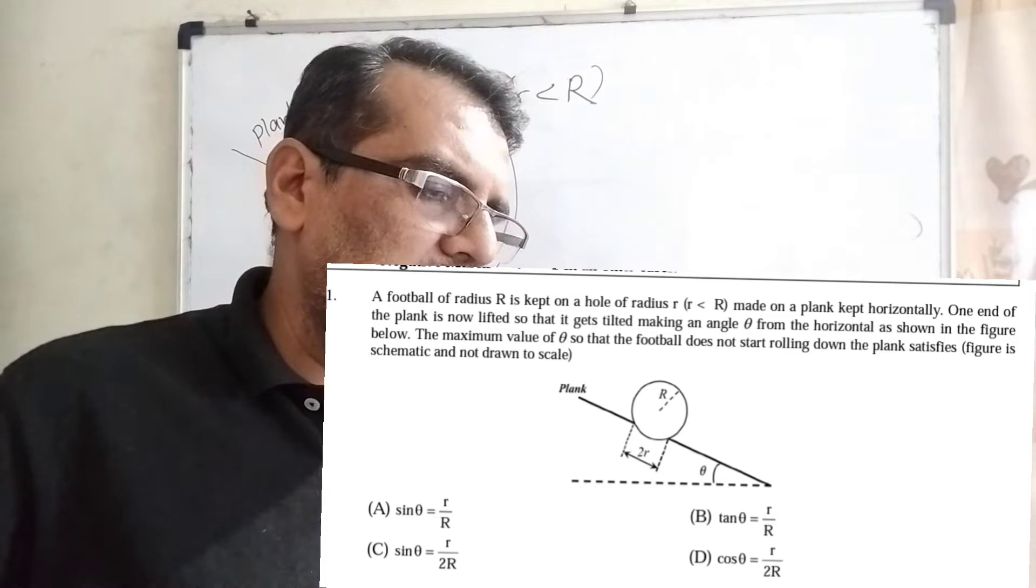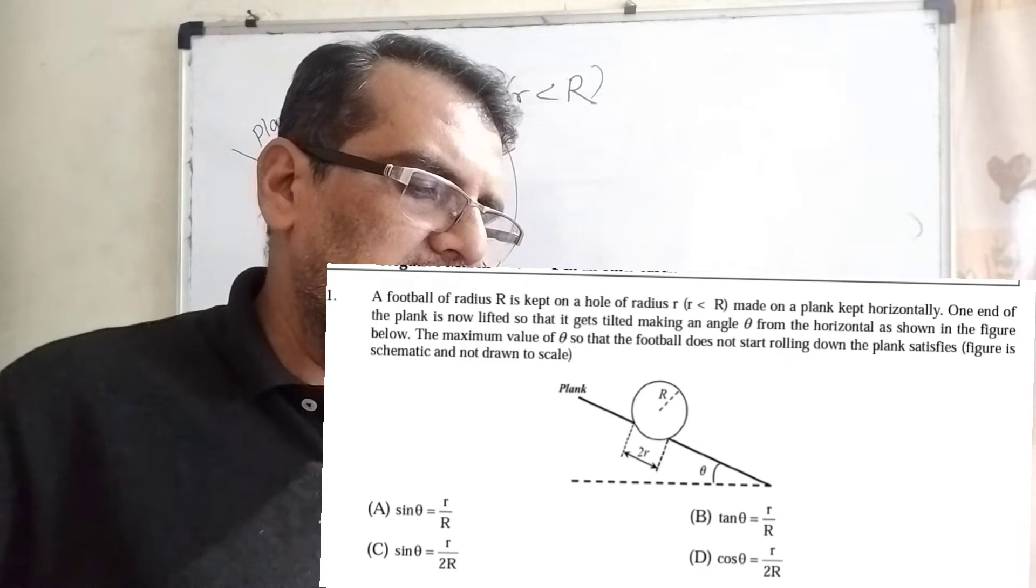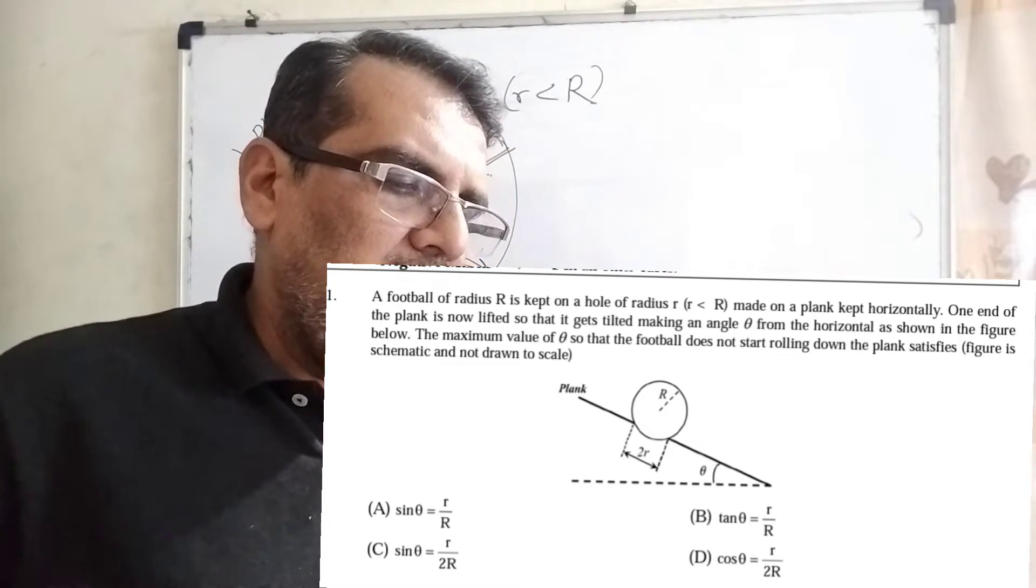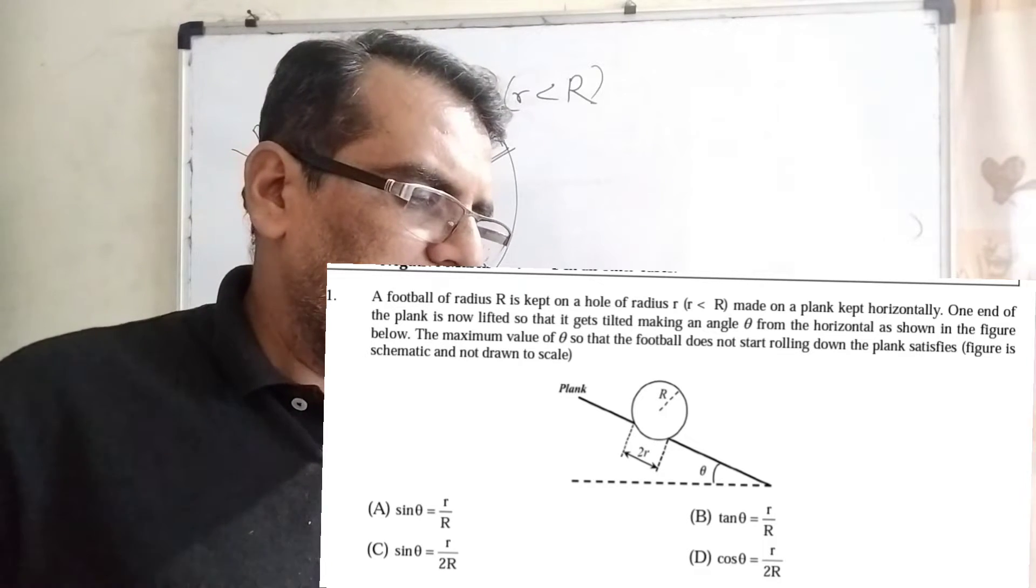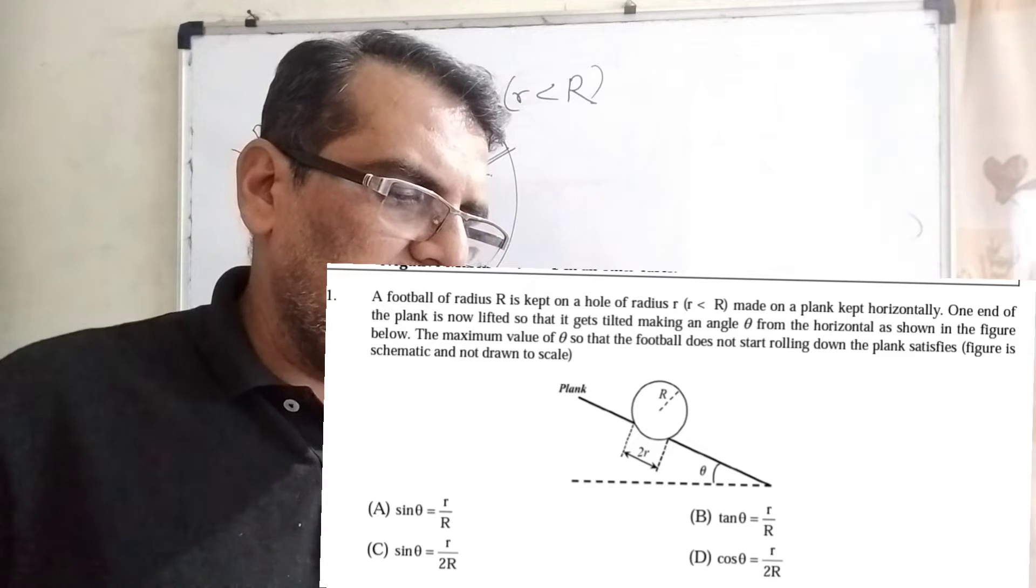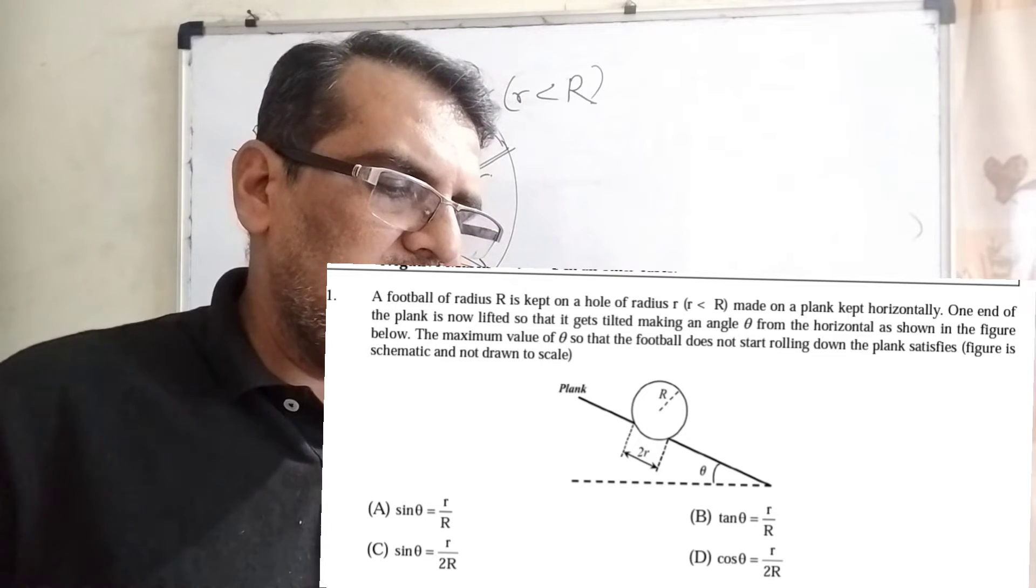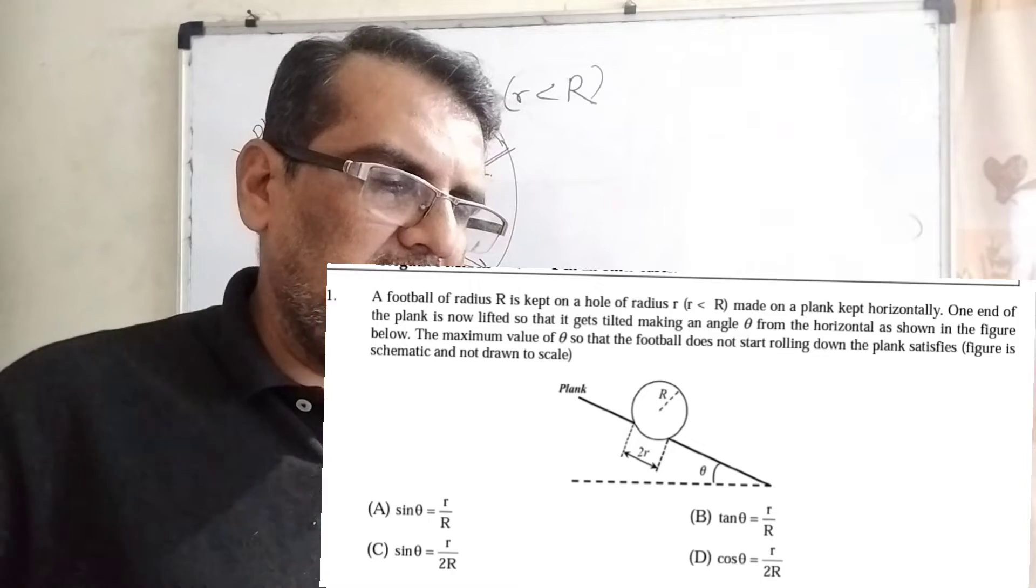One end of the plank is now lifted so that it gets tilted making an angle theta from the horizontal according to the figure. Find the maximum value of theta so that the football does not start rolling down the plank.